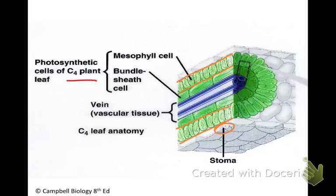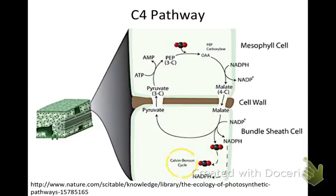It has mesophyll cells, which are on the outside of the plant, near where the stomata would be — the outer edges. And then inside, closer to the vascular tissue where the carbon molecules — your glucoses and simple sugars — it needs to have the carbon fixing going on near those, the creation of sugars going on near the vascular tissue. And so it has the bundle sheath cells as well.